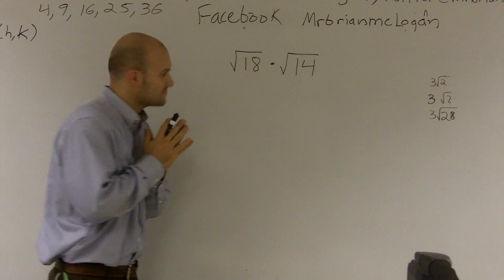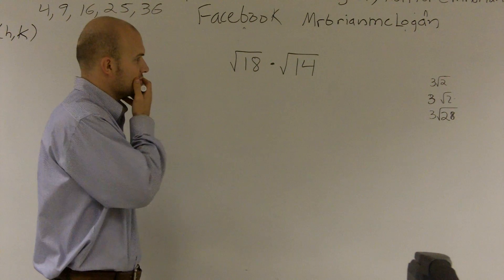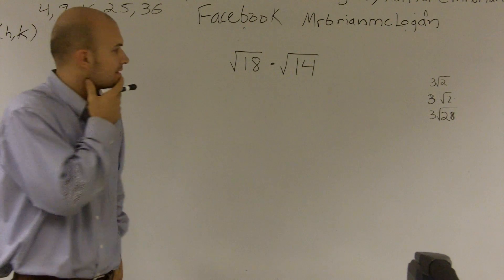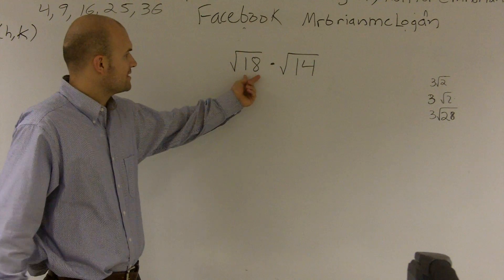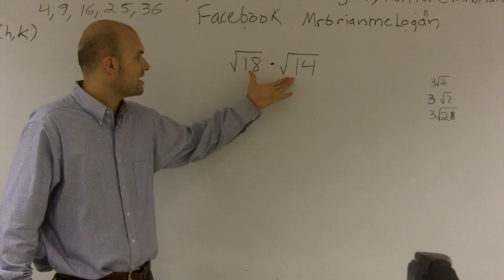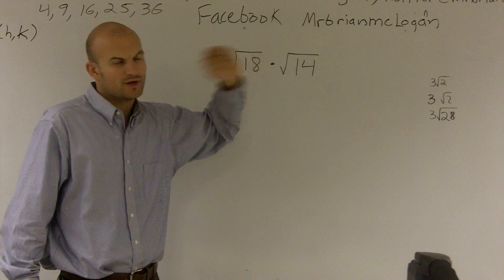What we're going to do here is we have two radicals that we need to multiply together. So there's a couple ways we could do this. First way is you could just multiply everything that's inside this radical times this. Since they are products and since they're both individual terms, we can just multiply them and then take the root of that.